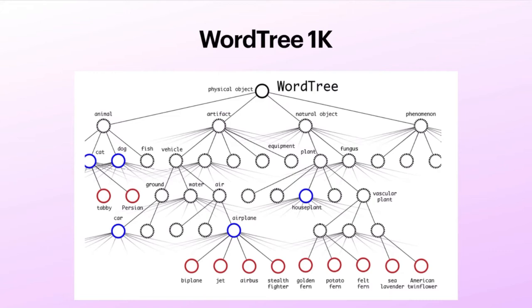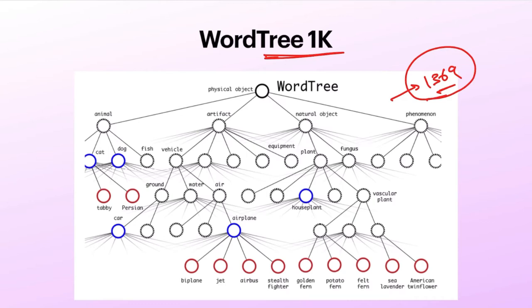This is still a classification task at this point — not an object detection task. What they did is, out of the total ImageNet dataset, whatever the 1000 classes generally used for ImageNet training, they added the intermediate nodes from the COCO dataset, which creates the total tree structure hierarchy. This gives 1369 labels. So from 1000, it has increased to 1369 labels, and DarkNet is trained on this WordTree dataset with 1369 labels instead of the standard ImageNet dataset.